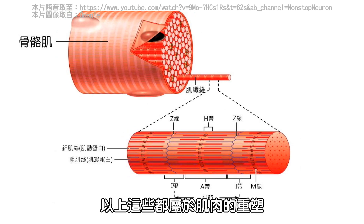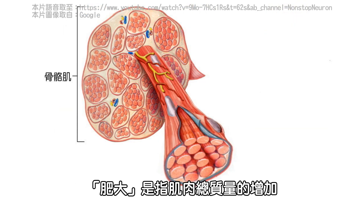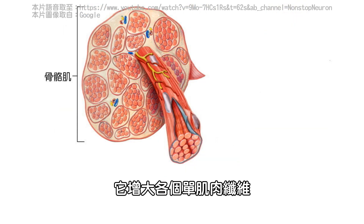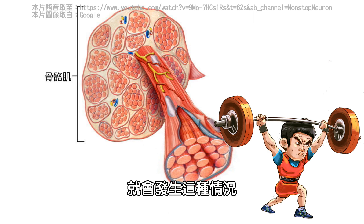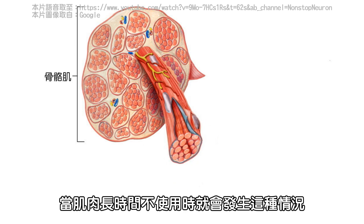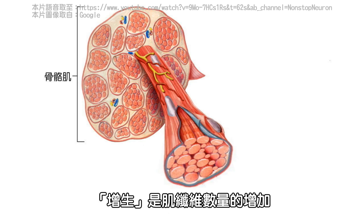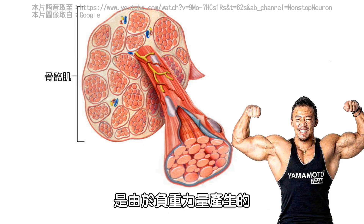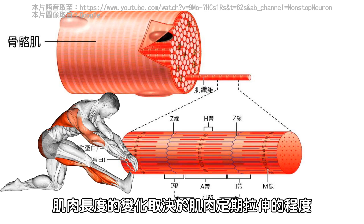So this was all about muscle remodeling. Here's a quick summary: Muscle remodeling occurs to match the requirements placed on the muscles. Hypertrophy is an increase in the total mass of the muscle by enlarging individual muscle fibers; it occurs when the muscle is loaded during the contractile process. Atrophy is a decrease in the total mass of the muscle, which happens when the muscle remains unused for an extended period. Hyperplasia is the increase in the number of muscle fibers due to extreme force generation. And finally, adjustment of muscle length occurs depending on how much the muscle is being stretched on a regular basis.